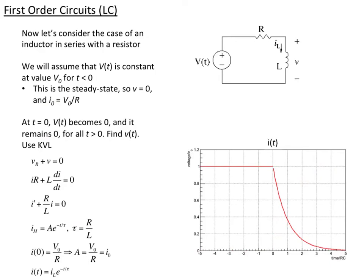Now we move to the RL circuit, replacing the capacitor with an inductor. This time I use a voltage source rather than a current source, which makes more sense with an inductor. Starting in steady state with the source on at value V₀, the current cannot be changing through the inductor, so there's no voltage across it. All the voltage drop is across the resistor, so the initial current is V₀ over R.